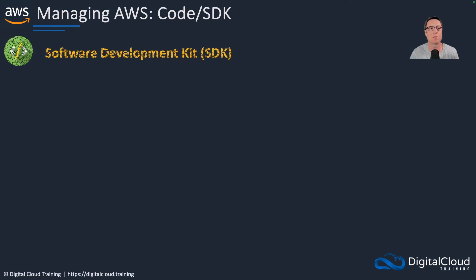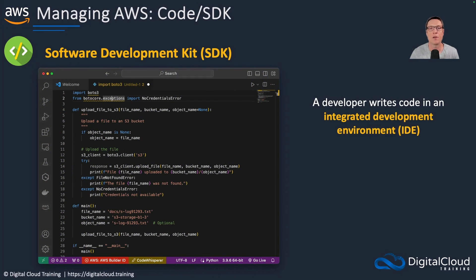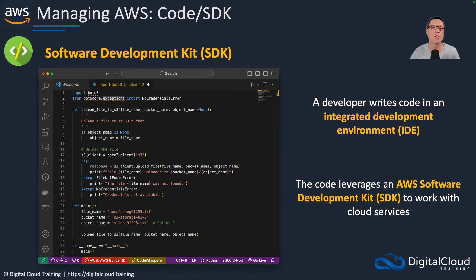Lastly, we have programmatic management using a software development kit. There are several SDKs for different programming languages — for example Boto3 for Python. A developer writes code in an integrated development environment, or IDE, and that code is able to speak to the API on AWS. So basically anything you want to do in the cloud you can do through the management console, the command line interface, or if you're a developer, you can leverage one of the software development kits. We can perform this management from anywhere in the world over the internet. That's it for this lesson — a brief overview of cloud computing and AWS — and we're going to get into a lot more detail in subsequent lessons.